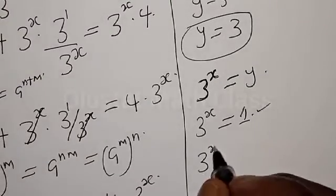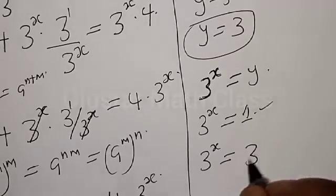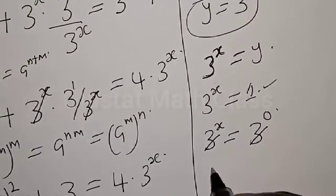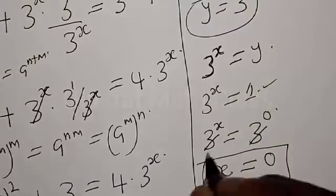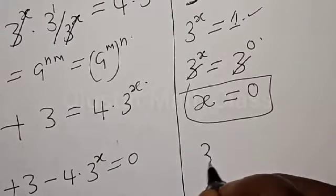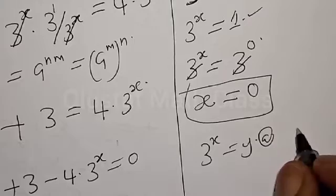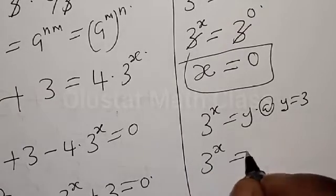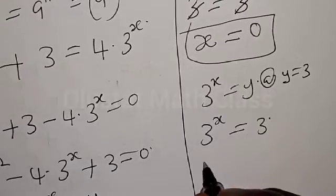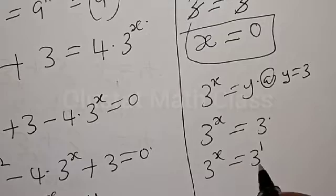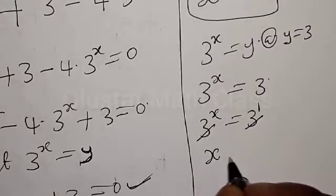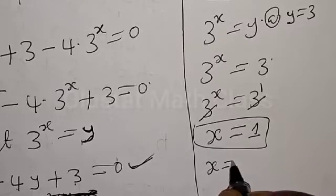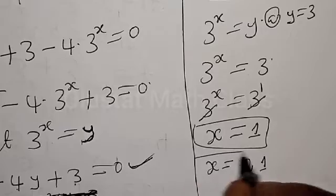From the first case, 3 raised to power x equals y equals 1. Since any number raised to power 0 is 1, we have 3 raised to power x equals 3 raised to power 0, and since they have the same base, x equals 0. For the second case, y equals 3, so 3 raised to power x equals 3, which is the same as 3 raised to power x equals 3 raised to power 1. Since they have the same base, x equals 1.